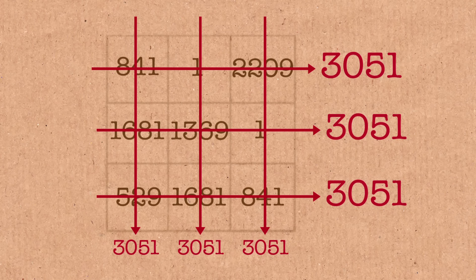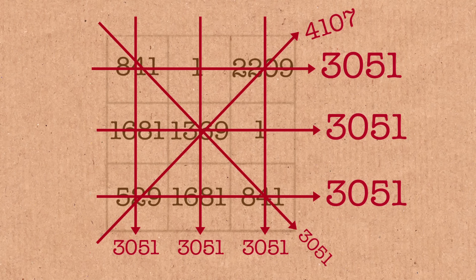It only works for one of the diagonals. So this diagonal here works. This diagonal here doesn't work. And so it's a semi-magic square.